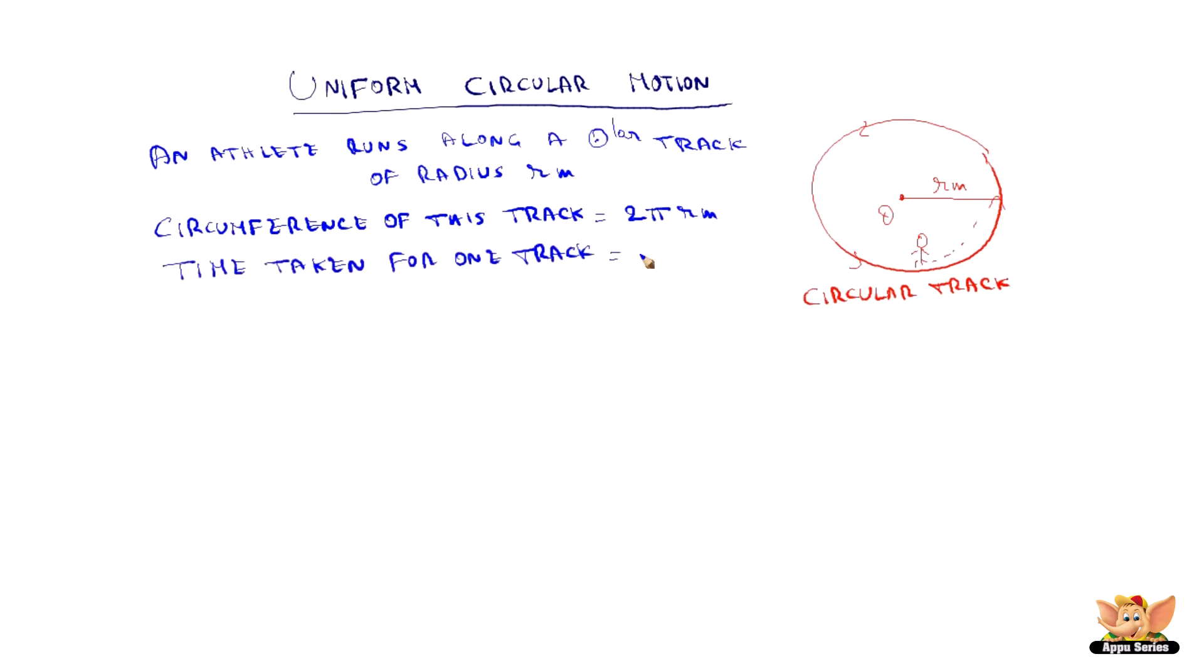Now, the time taken for running along this track, let us say is t seconds. Then we know from the velocity definition, distance travelled by time taken and in this case, for one round, he takes 2πR meters by t seconds.